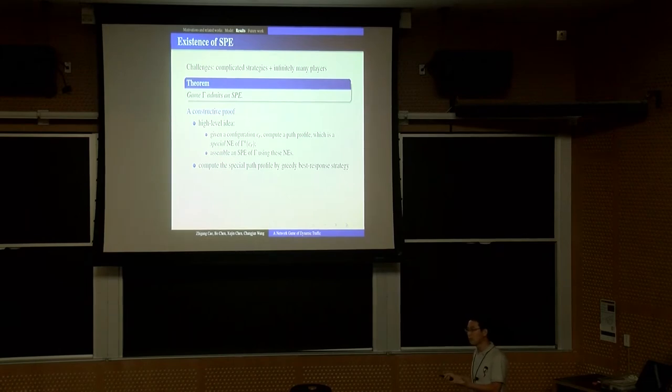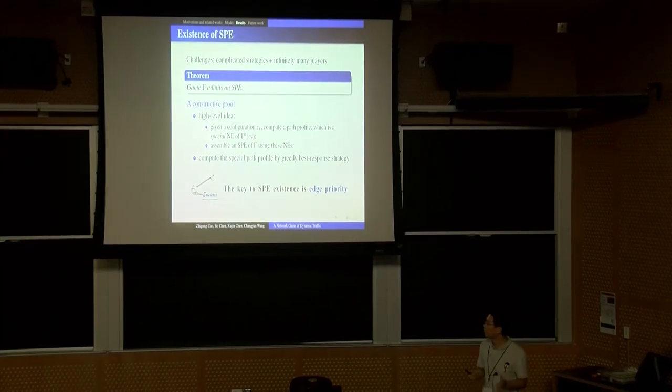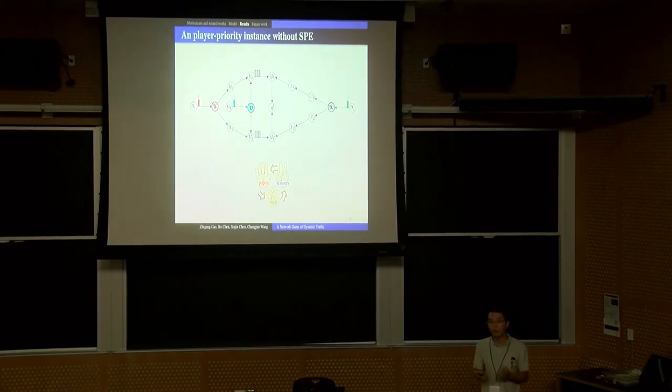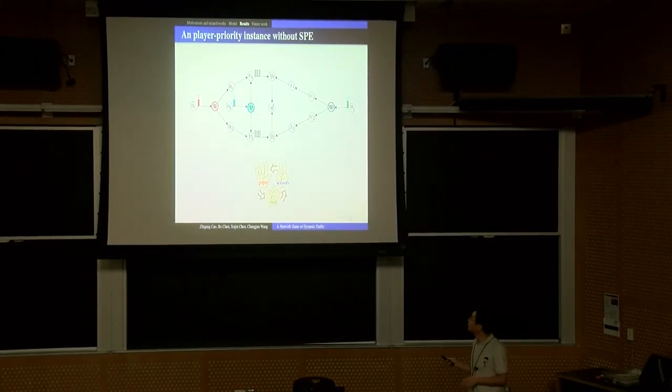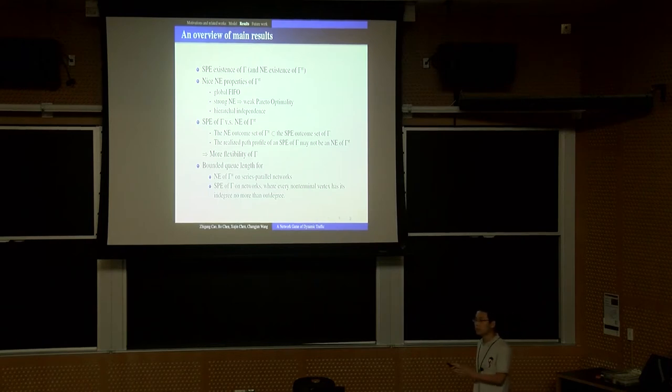In fact, we use a contraction method to prove the SPE existence. I want to emphasize here that the key to SPE existence is the edge priority. We have an example to show if we use player priorities to break ties, then the SPE may not exist. Then we characterize all Nash equilibrium of the simplified game Gamma N. We prove that all Nash equilibrium satisfy some nice properties like global first in, first out. Each Nash equilibrium is a strong Nash equilibrium, which means each Nash equilibrium is weakly Pareto optimal, and some other nice properties.